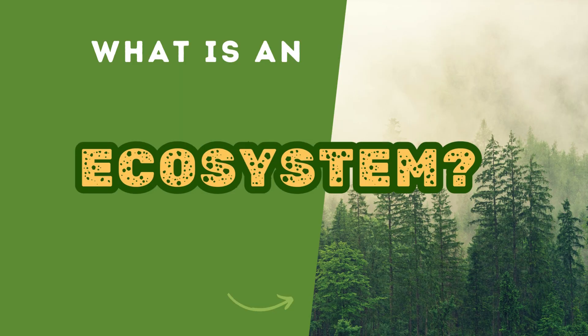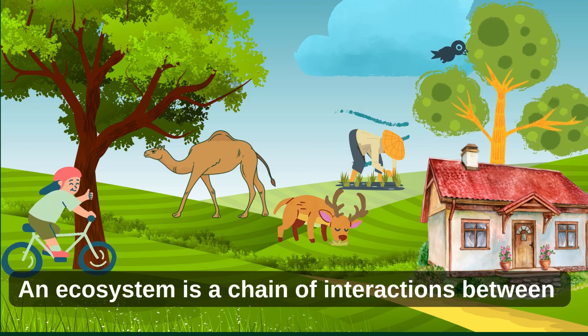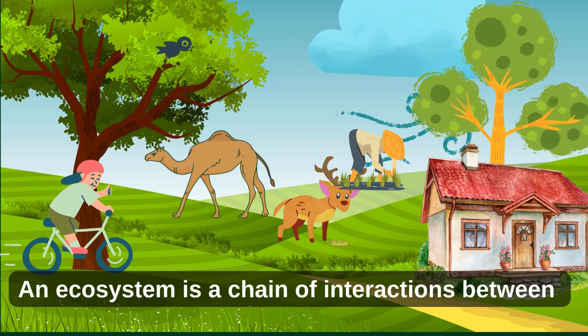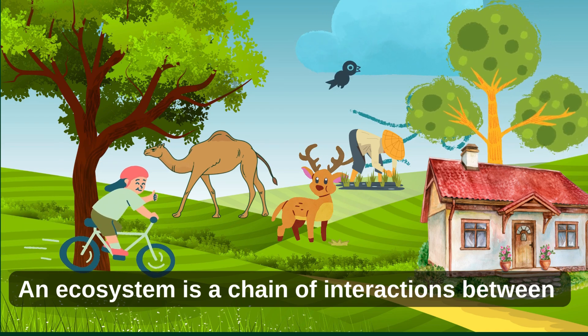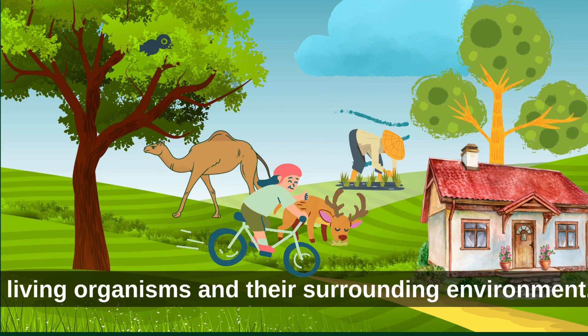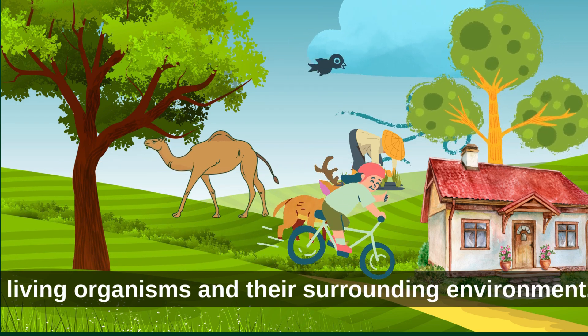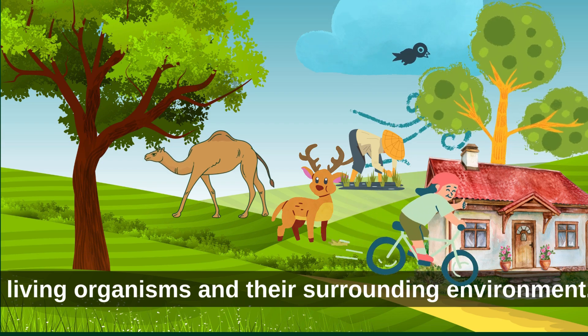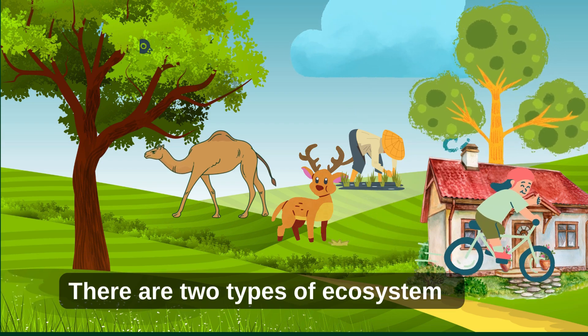Hello and welcome. Do you know what is an ecosystem? An ecosystem is a chain of interaction between living organisms and their surrounding environment. There are two types of ecosystem.